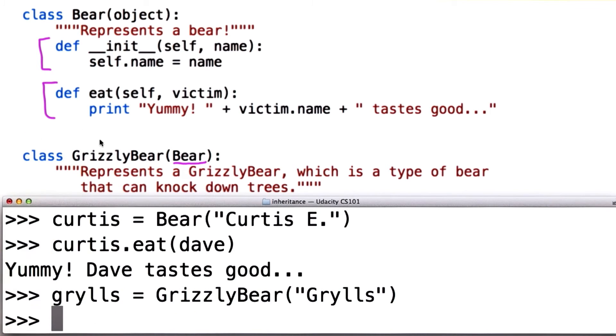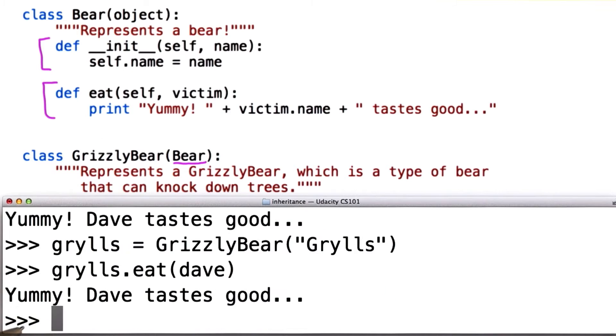We didn't define any attributes for grizzly bear, but it has some. The grizzly bear can also eat Dave. It's okay, Dave can be eaten more than once. And we can look a little more closely at what these attributes are.